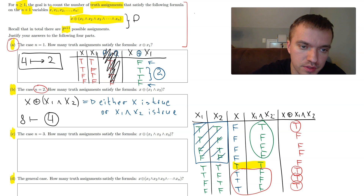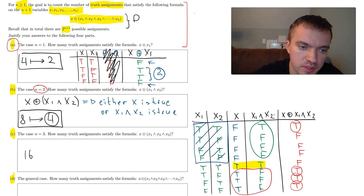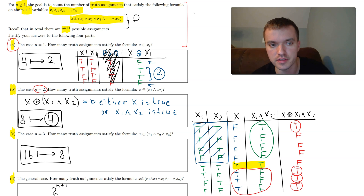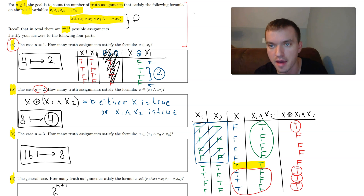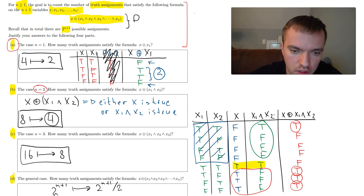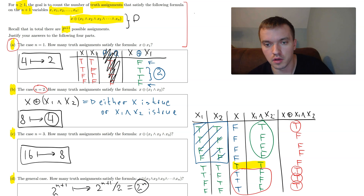Looking at the pattern: for n=1 we had 4 total possibilities and 2 truth assignments; for n=2 we had 8 possibilities and 4 truth assignments; for n=3 (Part C, your homework) we expect 16 possibilities and 8 truth assignments. In general, the number of truth outcomes is always exactly half of the total possibilities. So the final answer is 2^(n+1) / 2 = 2^n.